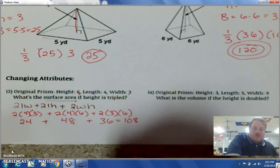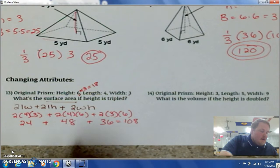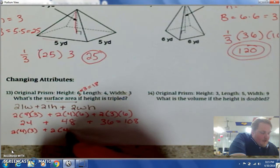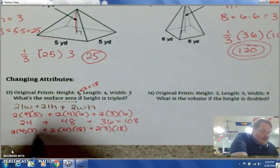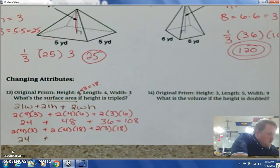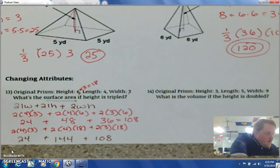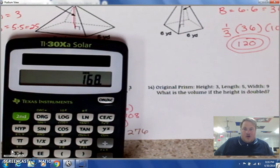But what happens if the height is triple? So instead of 6, I times it by 3 and the height is now 18. Let's look at how this will change the shape. So 2 times 4 times 3 plus 2 times our length is 4, but our new height is 18. Plus 2 times our width is still 3, but our new height is 18. This is still 24, this is 144, and this is 108. So if we add all those together, we now have 276. And 276 minus 108 shows us that our surface area is increased by 168.